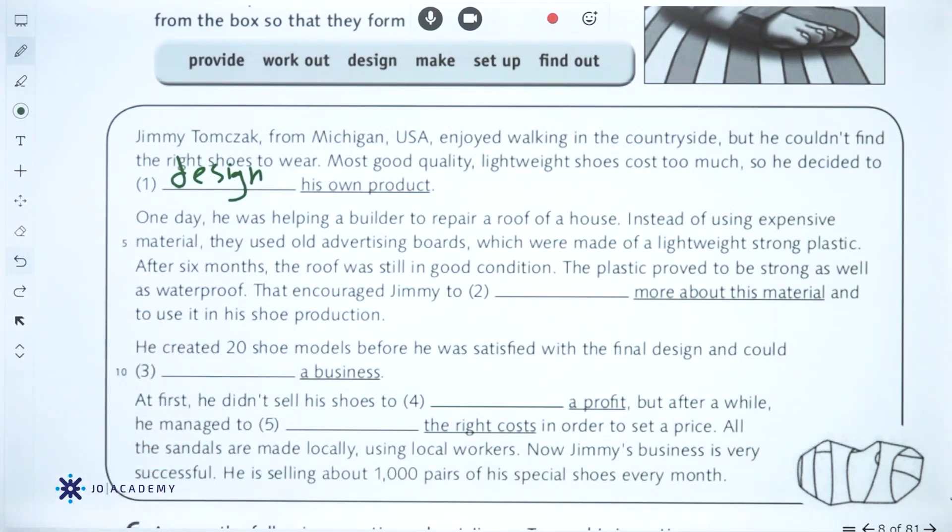One day he was helping a builder to repair a roof of the house. Instead of using expensive material, they used old advertising boards which were made of lightweight strong plastic. After six months, the roof was still in good condition. The plastic proved to be strong as well as waterproof.